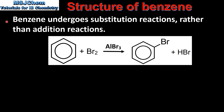Next, benzene undergoes substitution reactions rather than addition reactions, which is what you'd expect if benzene contained three double bonds. In this reaction, benzene undergoes a substitution reaction with bromine to form bromobenzene and hydrogen bromide.